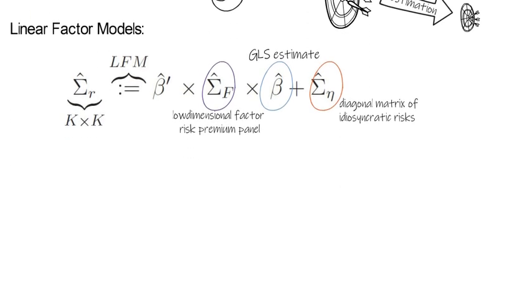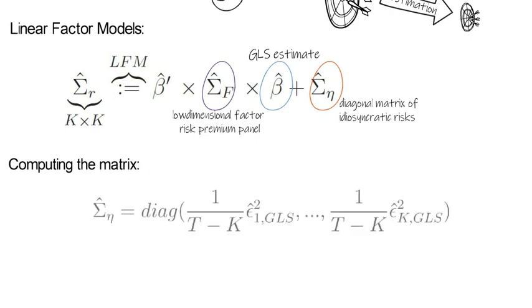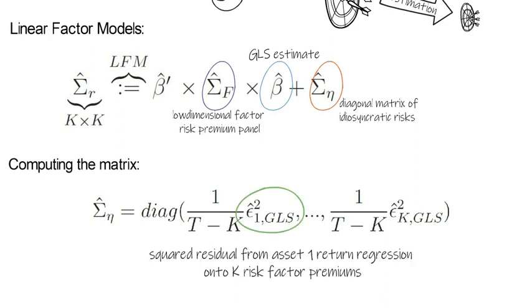And sigma hat eta is a diagonal matrix of idiosyncratic risks. One way to compute that sigma eta matrix is to do the following. Where, for example, epsilon hat 1 squared GLS is the squared residual from regressing the return of asset 1 onto all k risk factor premiums.